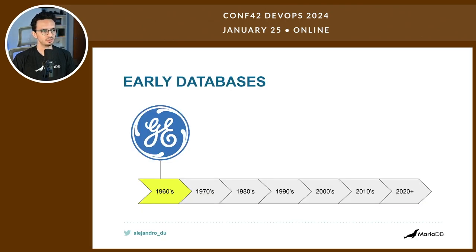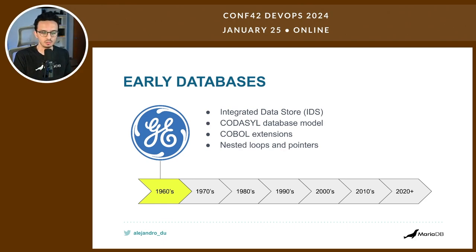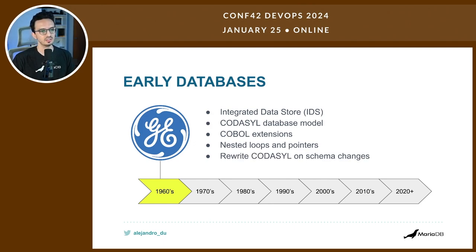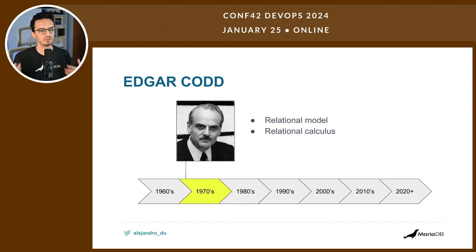Let's start with a very brief history of relational databases. It all started in the 1960s with General Electric and the Integrated Data Store — the very first database we know of, though not a relational one. That led to the CODASYL database model, which were extensions to the COBOL programming language so developers could query databases using nested loops and pointers, requiring rewrites on every schema change. Edgar Codd recognized this problem and proposed the relational model — essentially tables with columns and rows, which is what modern databases use.